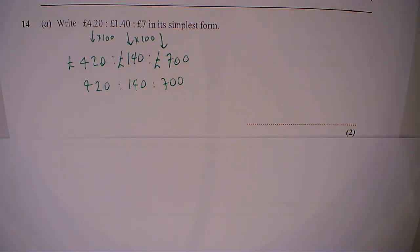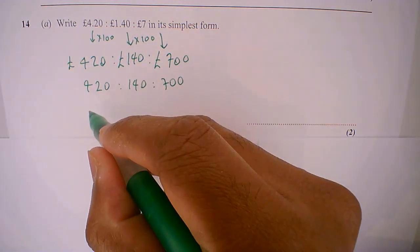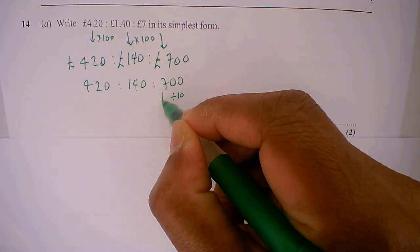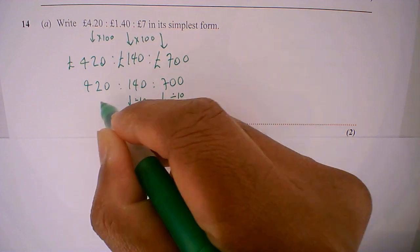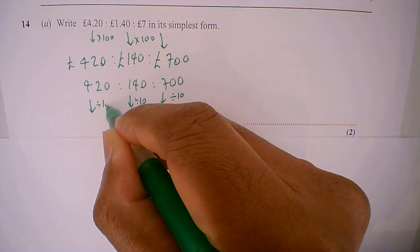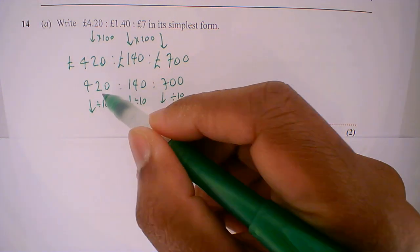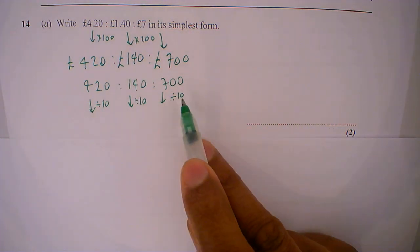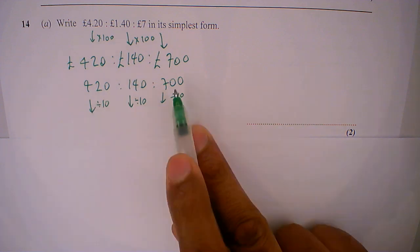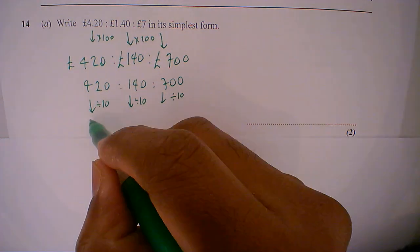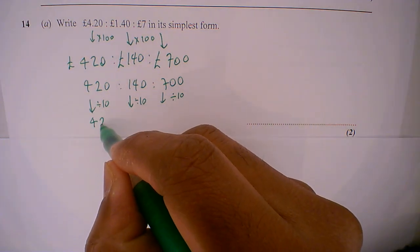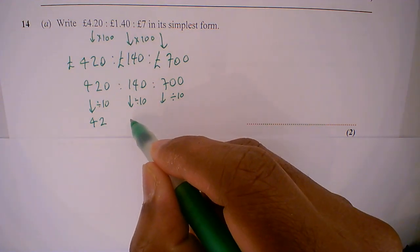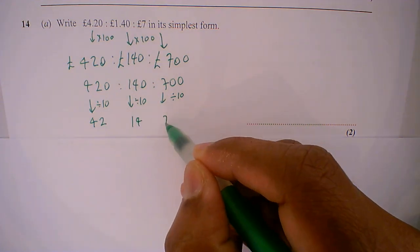The first thing I recognize is I can divide them all by 10. Now if you can spot the highest common factor, that would be better. I could also divide by 2 because they are all even numbers. I could also divide by 5. I'm going with 10 initially. So 420 divided by 10 is 42, 14, and 70.